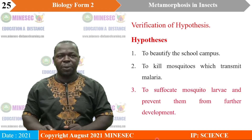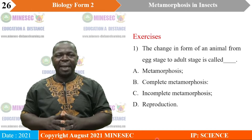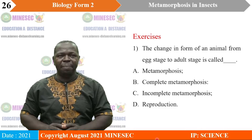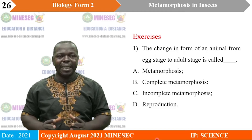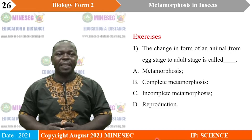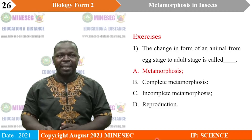Now let us get into our exercises. The first exercise: the change in form of an animal from egg stage to adult stage is called — A. Metamorphosis, B. Complete metamorphosis, C. Incomplete metamorphosis, D. Reproduction. Which of these is the correct answer? The correct answer here is A. Metamorphosis, which refers to the change in form of an animal from the egg stage to the adult stage.